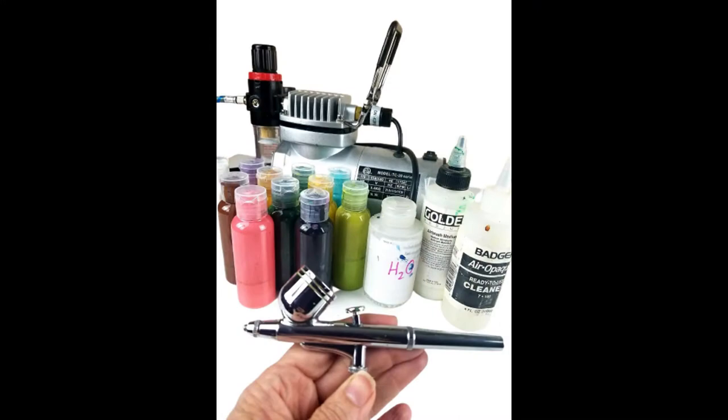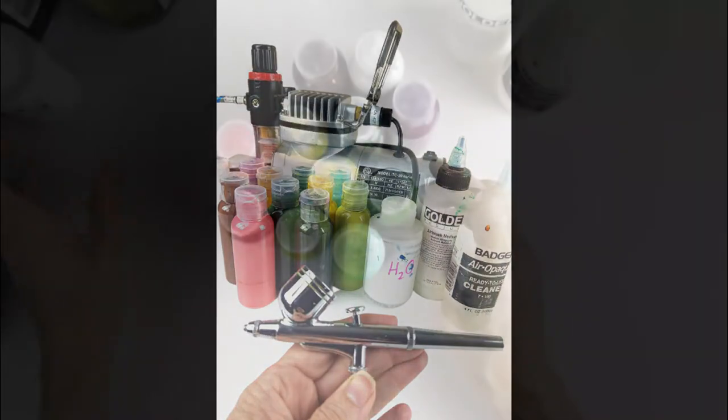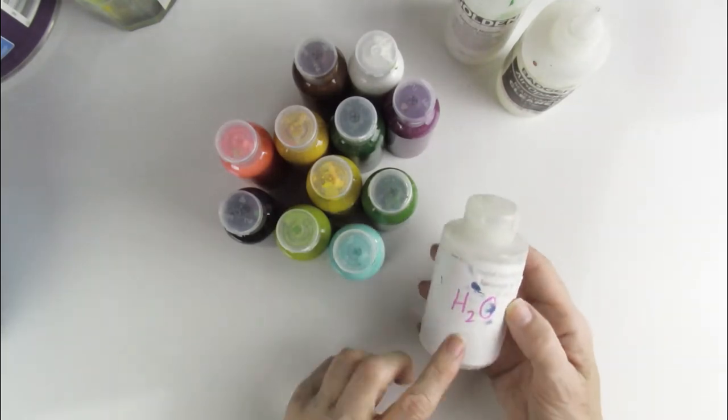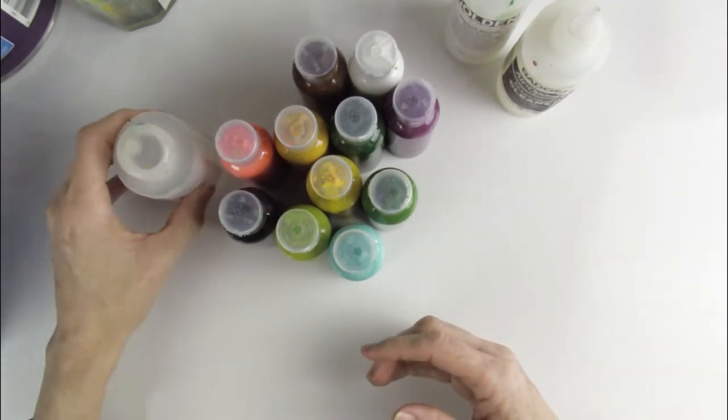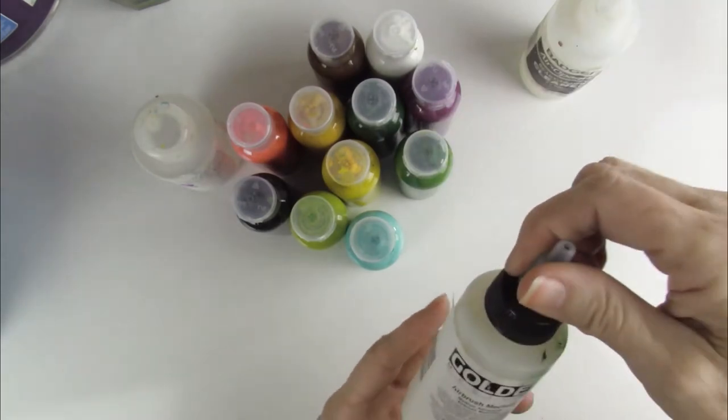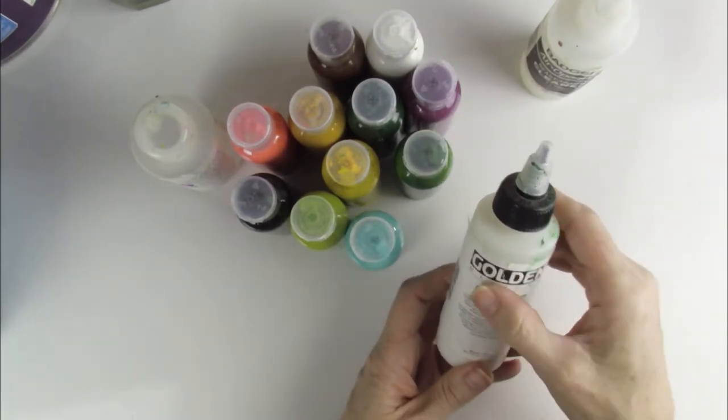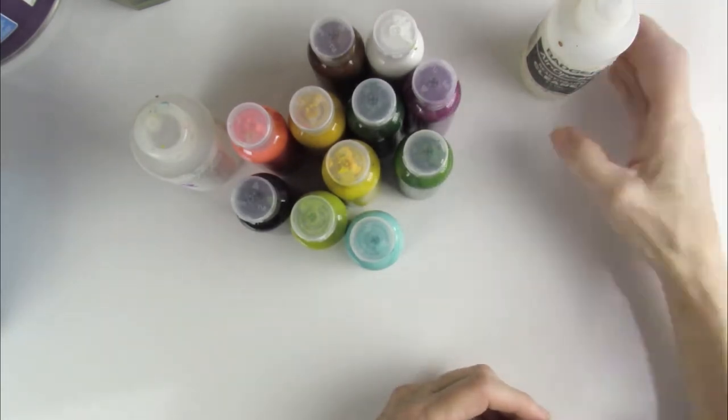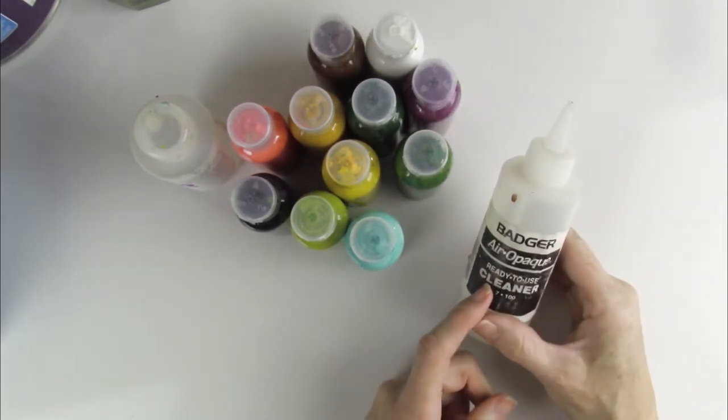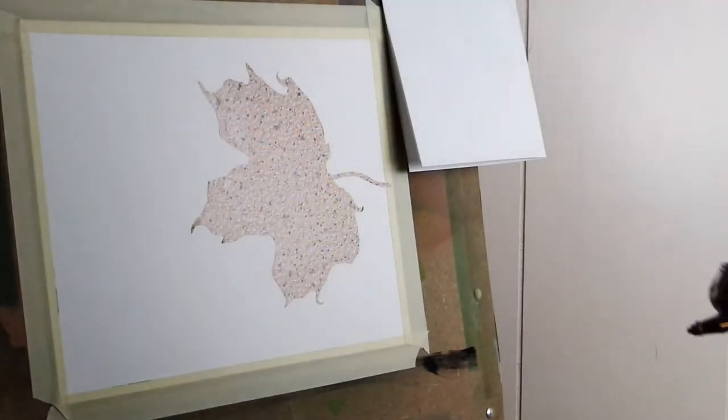Here's my airbrush supplies. I use acrylic paint transferred to little clear bottles and I use distilled water to thin the paints. The medium I like to use is by Golden. This provides the right viscosity to flow through the airbrush and when I'm finished I add a few drops of cleaner to the airbrush.